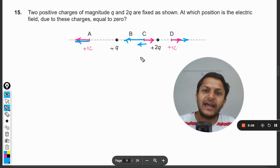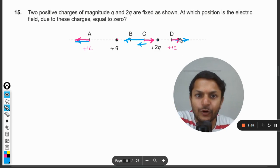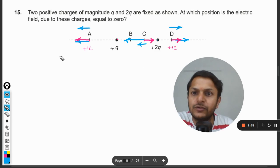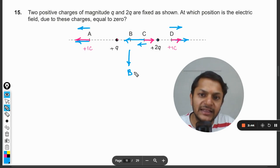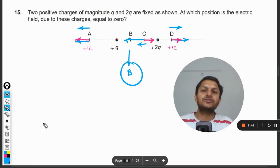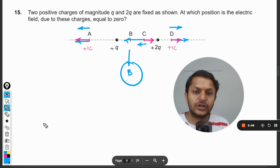Even at C it will not be zero. For D the net force is towards right, for A the net force is towards left, for C the net force is again towards left. So we are remaining only with one option and that is B. My students, B will be the correct answer. This is the correct explanation for this question.